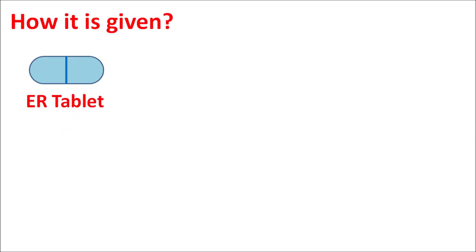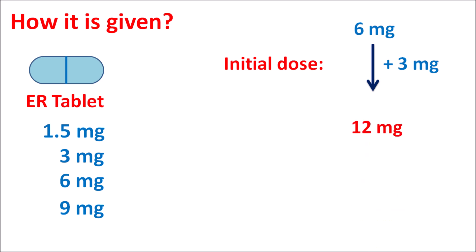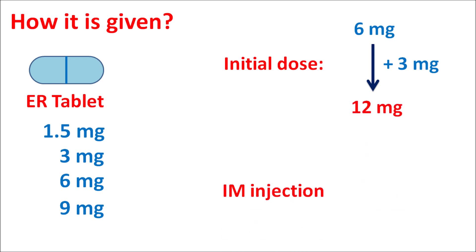Paliperidone extended release tablets are available at strengths of 0.5 mg, 3 mg, 6 mg, and 9 mg. The initial dose is 6 mg, which can be increased to 9 mg or reduced to 3 mg based on patient condition. The dose can be escalated at a rate of 3 mg every 5 days, with a maximum dose of 12 mg per day. As an intramuscular injection, the dose range is 39 to 234 mg.